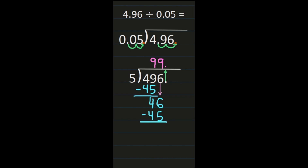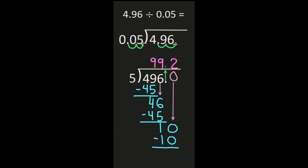Because I'm working with decimals I can't just put remainder 1. I'm going to go behind the decimal in my dividend, place a 0, and bring that 0 down — now I have 10. 10 divided by 5 is 2, and that 2 needs to go behind the decimal in my quotient. 2 times 5 is 10, and 10 minus 10 is 0. So my quotient is 99 and 2 tenths.